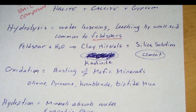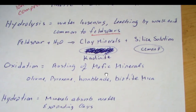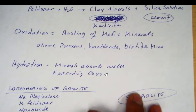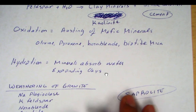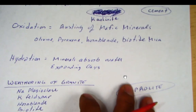Another type of chemical weathering is oxidation — basically adding oxygen, or rusting. This primarily affects the mafic minerals: olivine, pyroxene, hornblende, and biotite mica. So those end up getting oxidized over time. To summarize: feldspars get hydrolyzed, mafic minerals get oxidized. And then there's hydration, which is not as common — some minerals, especially some clays, can absorb water and expand, but that's not as important.